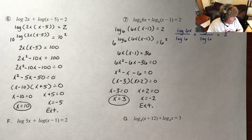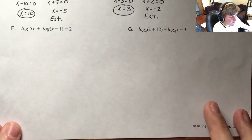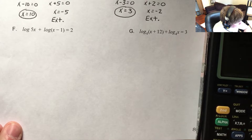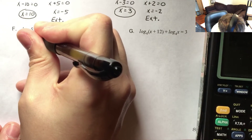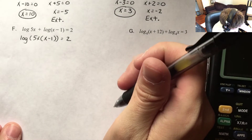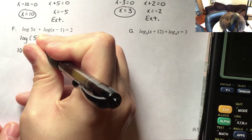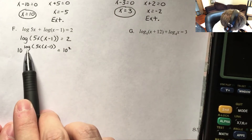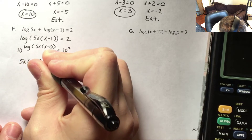Go ahead and try problems F and G on your own, then check with my work when you're done. So the product property tells me I can say log base 10 of 5x times x minus 1 is equal to 2. We can take 10 to each of these powers — 10 to the power of and log base 10 are inverses of each other — so now I have 5x times x minus 1 equals 100.